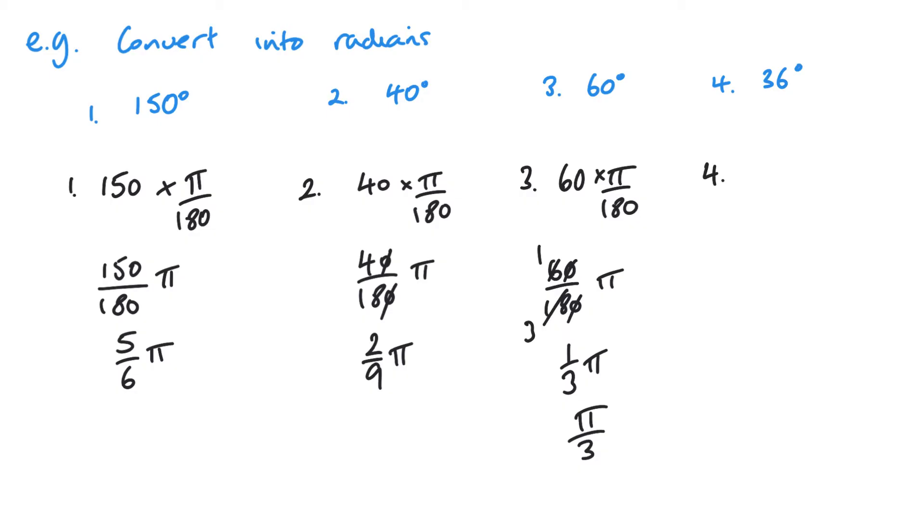Question number 4, 36 times pi by 180. So the same principle each and every time. Like I know 18 will go into this top one twice. That gives me 2 over 10, which is 1 over 5 pi, or pi by 5.